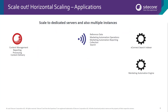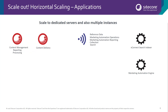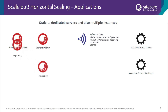Beyond databases, we can also scale the applications out. The classic roles for content management, processing, reporting, and content delivery maintain their horizontal scaling capabilities from previous versions. First, scale out initially role by role. Except for reporting, you can then scale out to multiple instances as well.